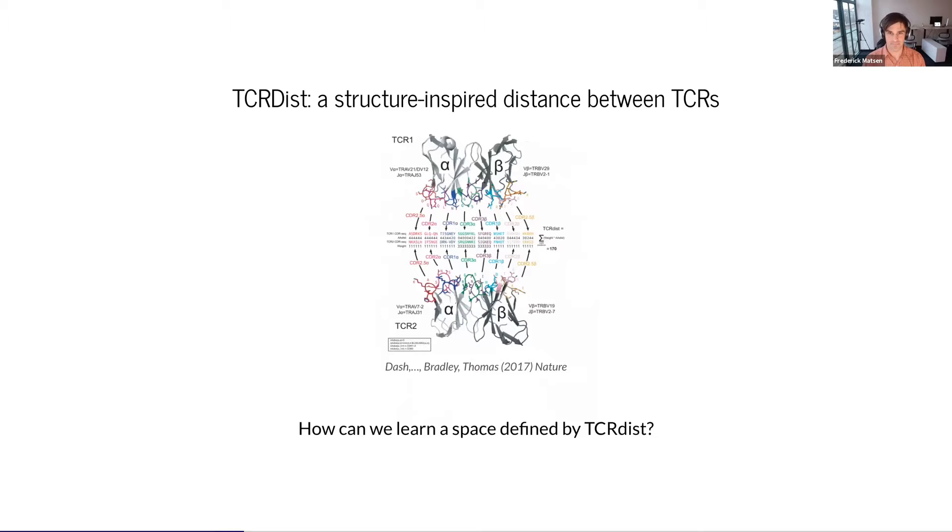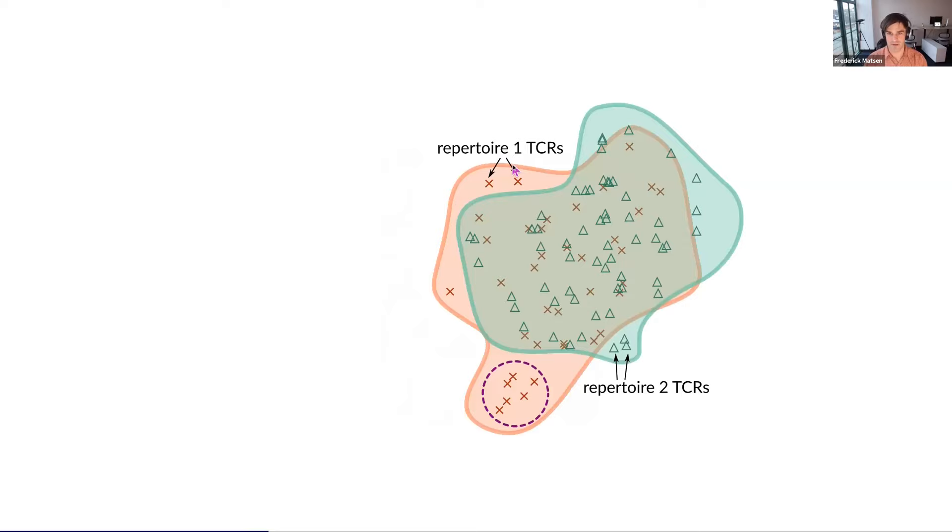If we have this TCRDIST and our space defined by TCRDIST, how are we going to learn in this space? Here we have an example of two different TCR repertoires. We had Xs, which are TCRs from one repertoire, and triangles from another repertoire. One of the tasks we might want to do in such a space is figure out what's going on down here. We want to find stuff like this that's special for this one repertoire compared to the second repertoire. Let's try to find groups of sequences that are typical of their own repertoire, but are atypical of a second repertoire.